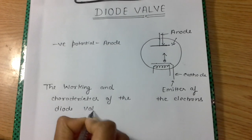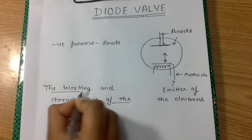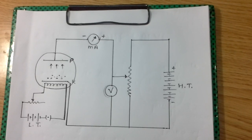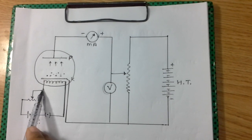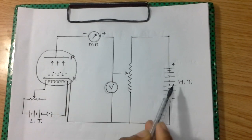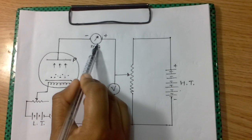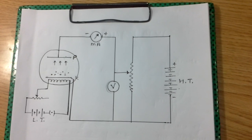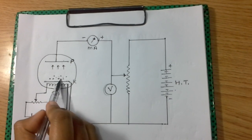Now we will discuss the working and characteristics of the diode valve. The working and characteristics of the diode valve can be understood using this simple circuit diagram drawn for a diode valve. The cathode is heated by using a low tension supply and the plate is kept at positive potential by using a high tension supply. A voltmeter notes the plate voltage, and a milliammeter notes the current flowing in this diode valve.